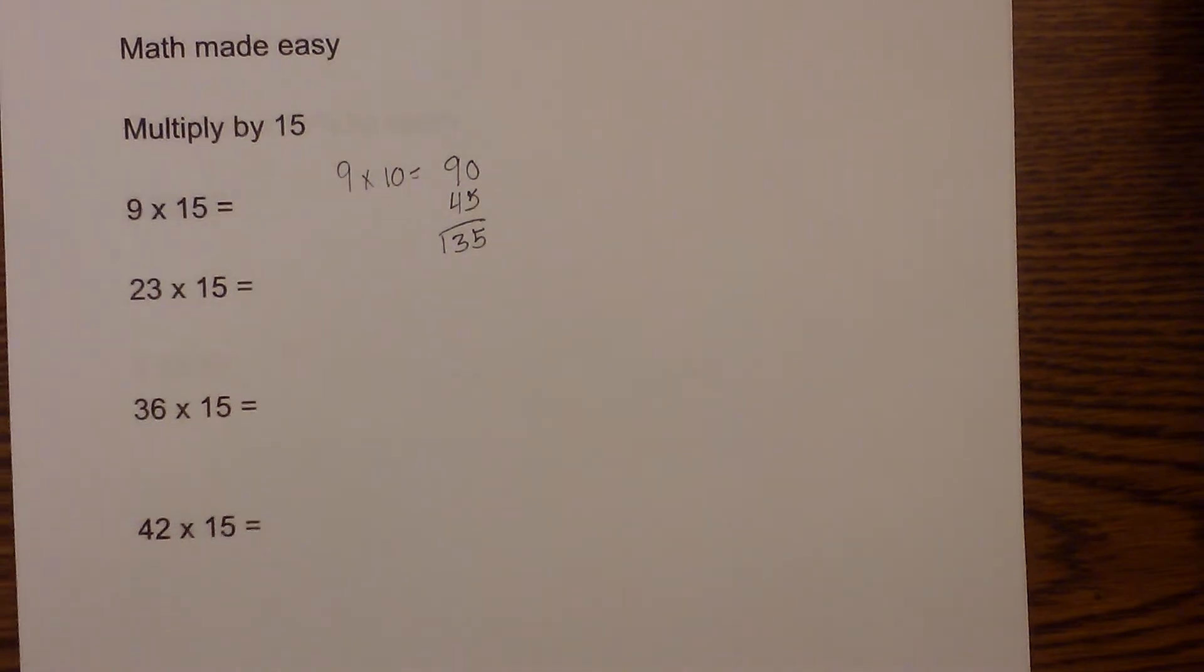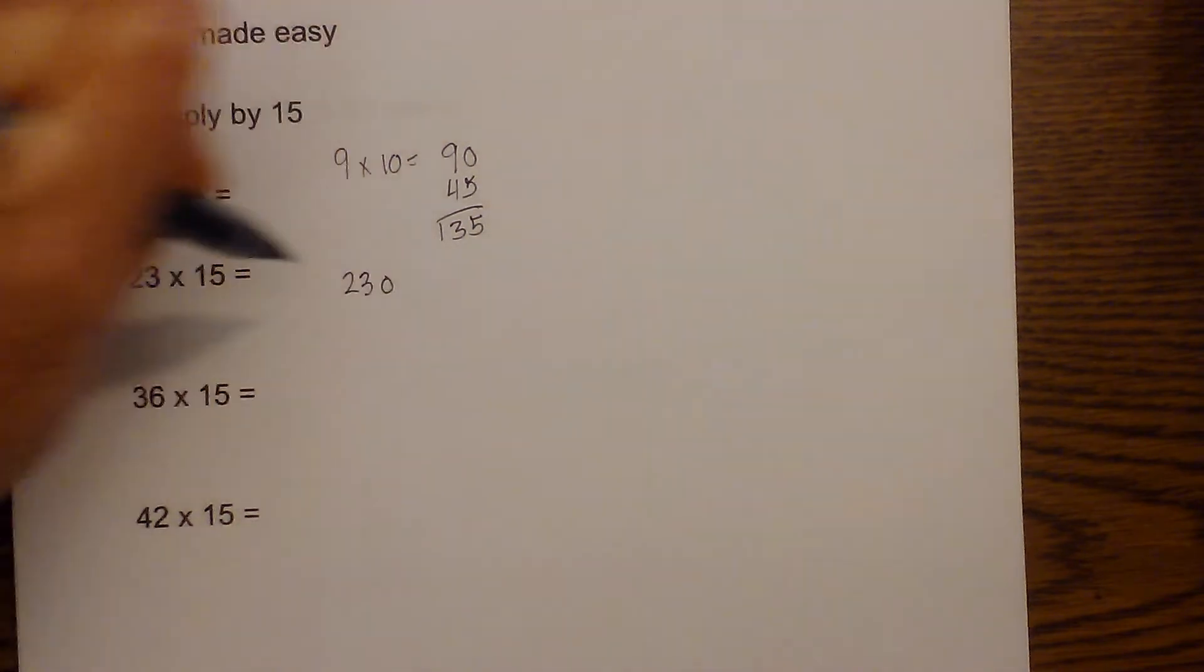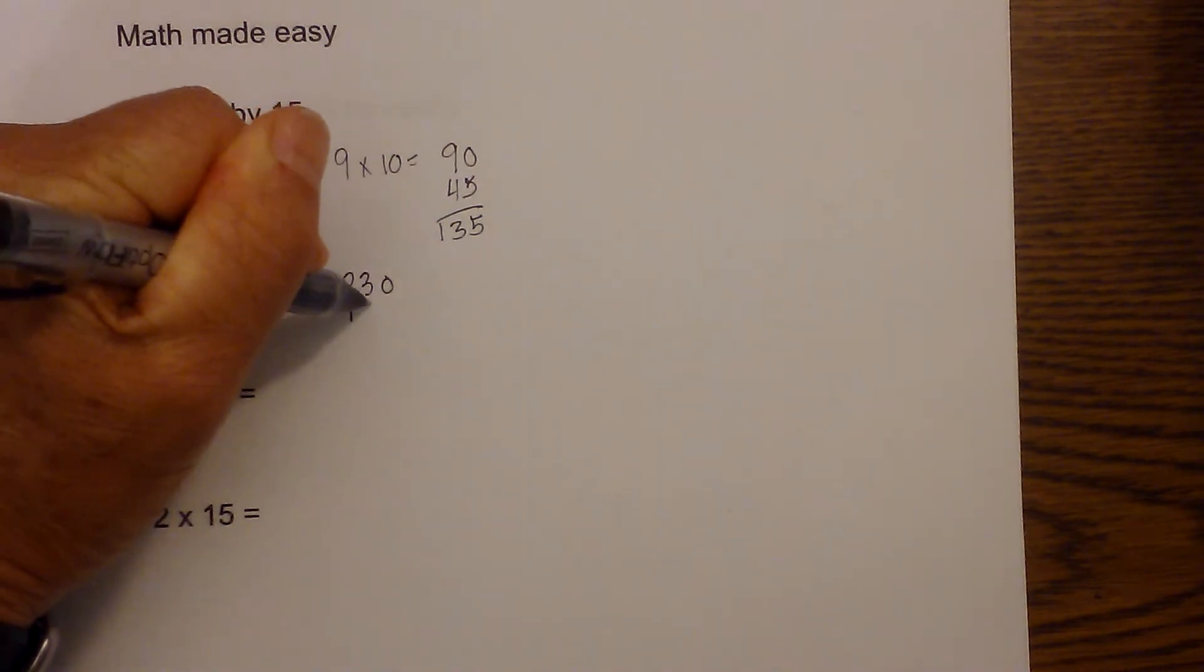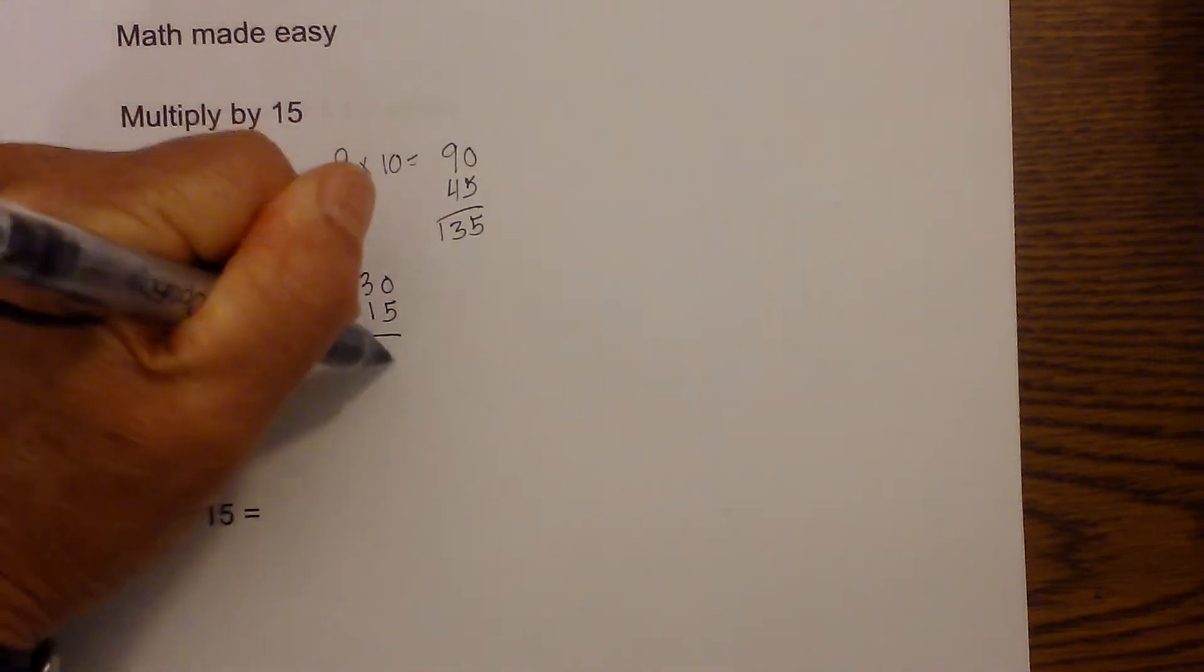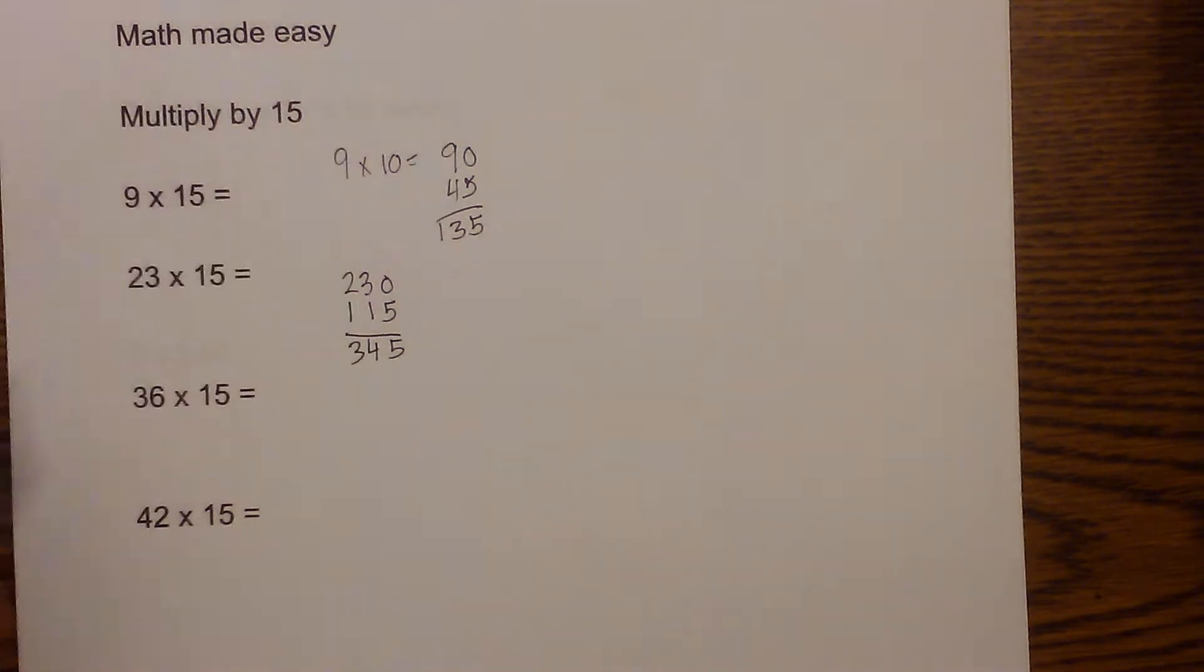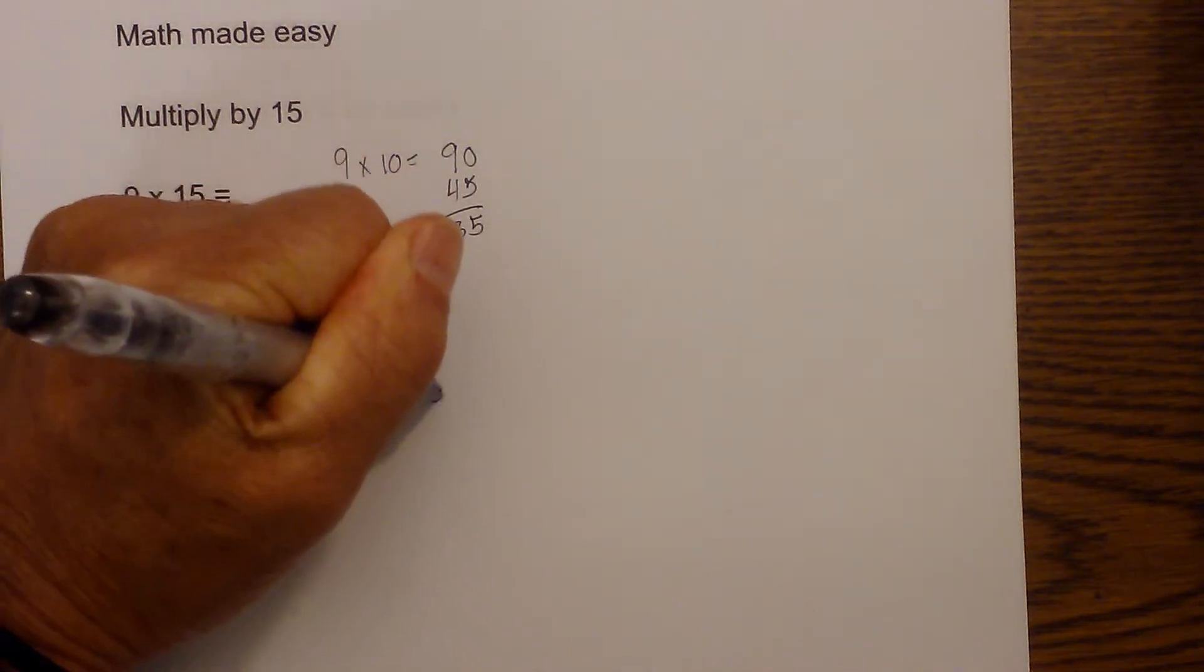Let's work a couple more examples like this. 23 times 15: take 23 times 10, which is 230. Take half of 230, which is 115. Add these together, and 23 times 15 is 345. 36 times 15: multiply it by 10, which is 360.